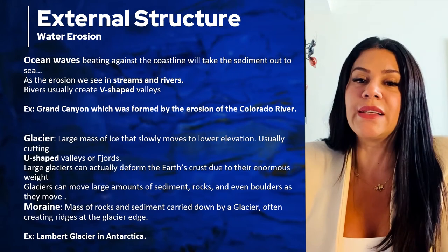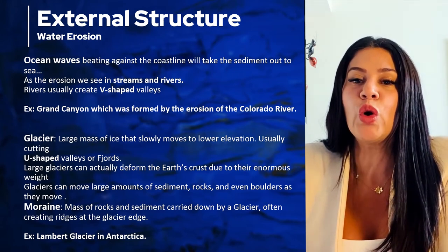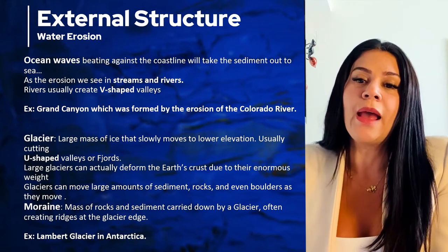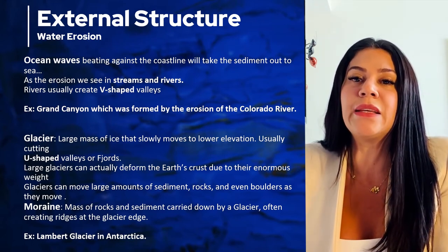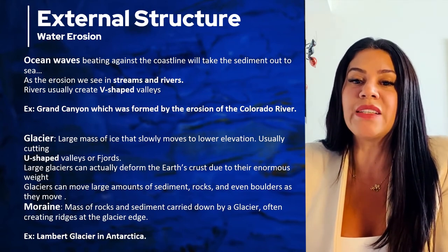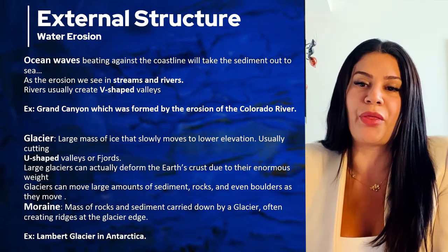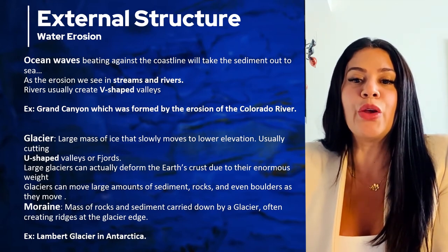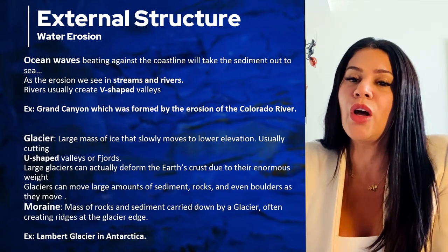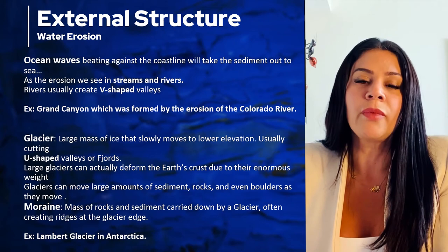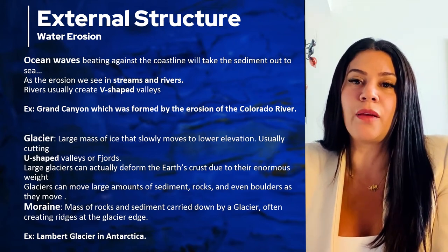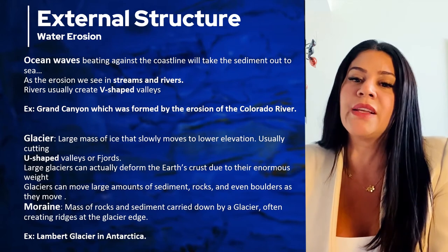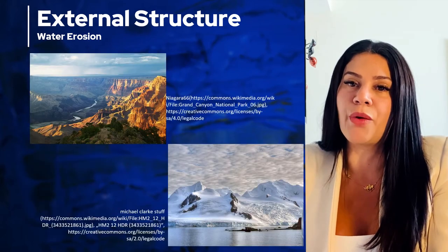Another type of erosion is glacier erosion. A glacier is a large mass of ice that flows slowly over the earth's surface, and they can be huge. The Lambert Glacier in Antarctica is the world's largest glacier — it's more than 60 miles wide, 270 miles long, and almost two miles thick. Large glaciers can deform the earth's crust due to their huge weight, moving not only sediment but large rocks. Due to their size they cut U-shaped valleys, and the material pushed to the side is called moraine, which can create hills surrounding the valley.